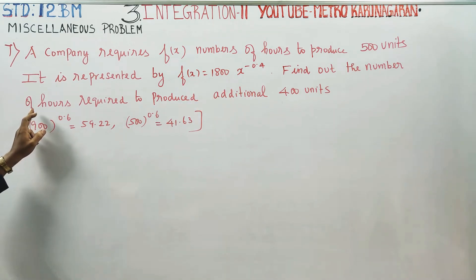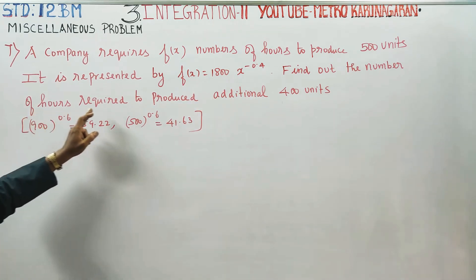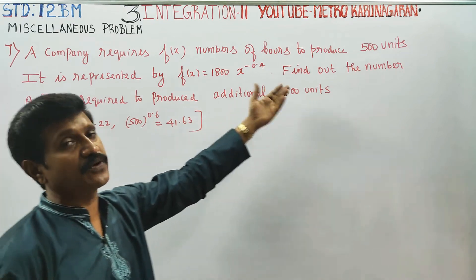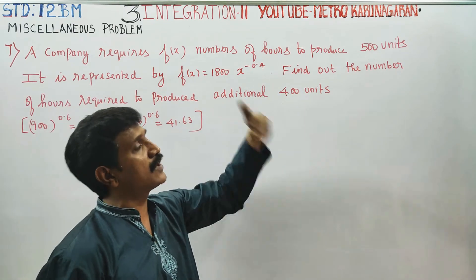Find the number of hours required to produce an additional 400 units. So, the first 500 units plus additional 400 units gives 900 units total.